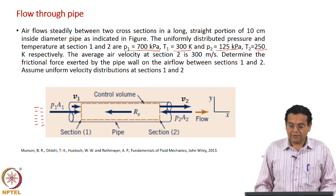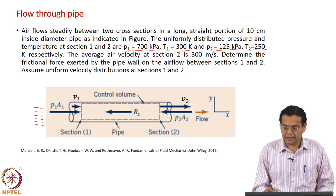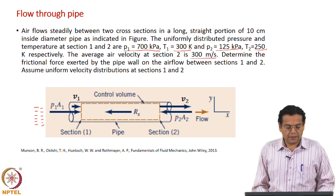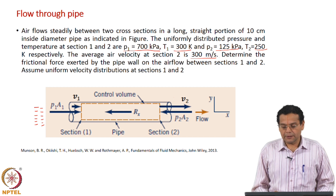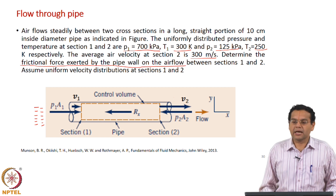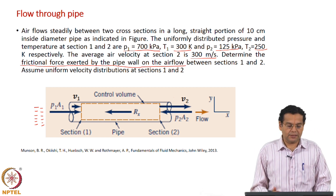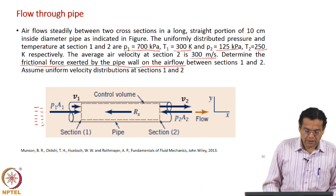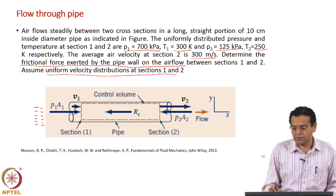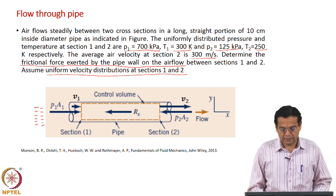The average velocity at section 2 is 300 meters per second — very, very high velocity. We are asked to determine the frictional force exerted by the pipe wall on the air flow between these two sections. We are also asked to assume uniform velocity distributions at section 1 and 2, which in fact we have been assuming across all examples here.